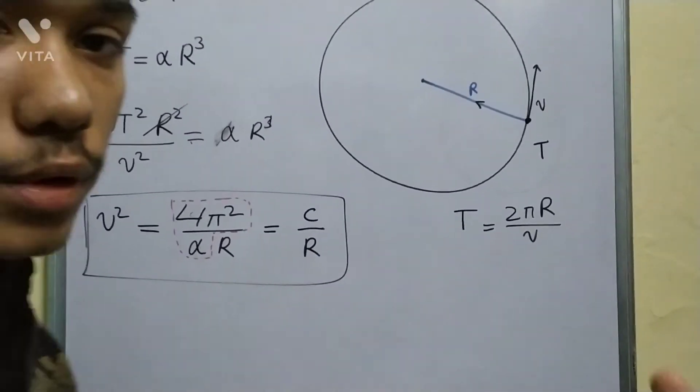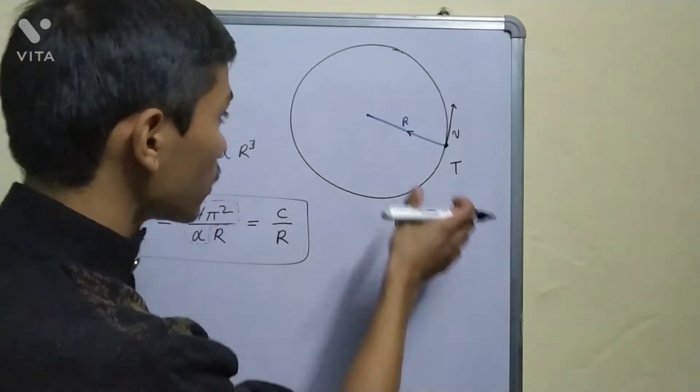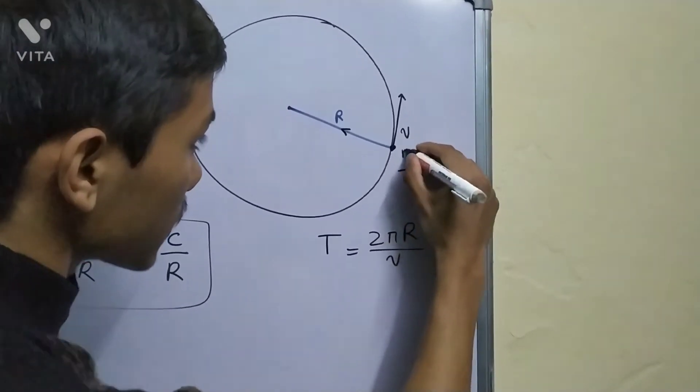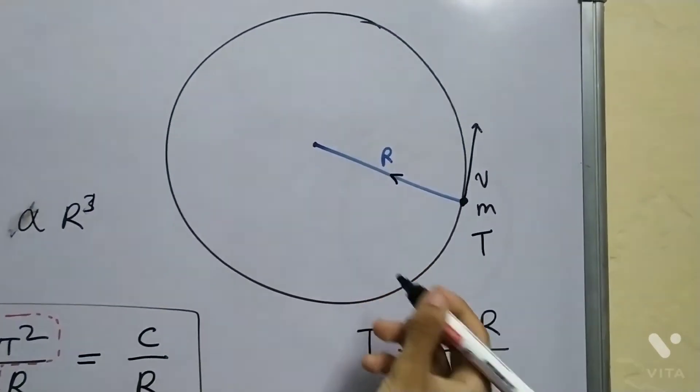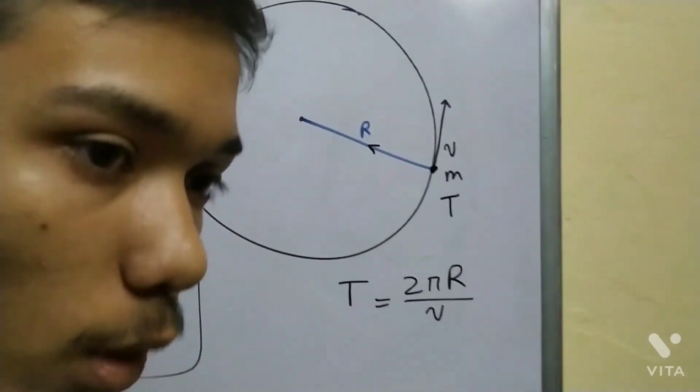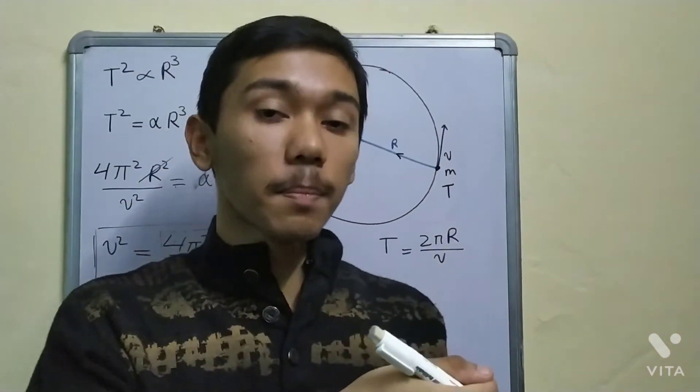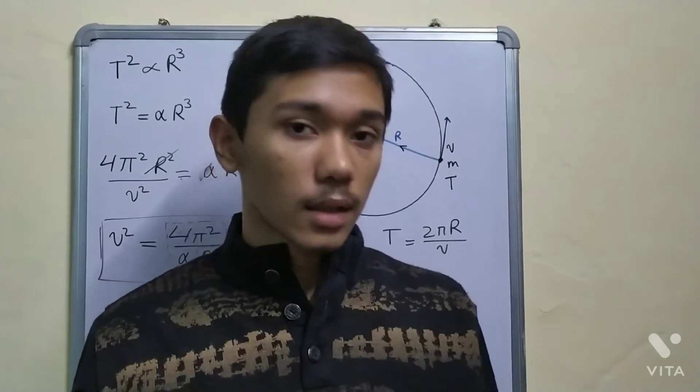And now we need to find out the force. So if you have this planet, let us say its mass is small m, it is being attracted inwards. And this inward force, this centripetal force, is provided by gravitation.